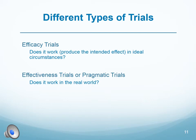Pragmatic or effectiveness trials have a different focus. They are intended to test whether an intervention actually works with actual patients in actual settings. There still will be a protocol, and certain people are eligible to participate and others are not, but usually these trials include a broader group of people. Patient-centered outcomes research tends to focus on pragmatic trials because those are the ones that actually answer the questions patients want answered.